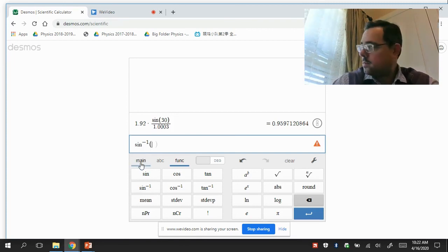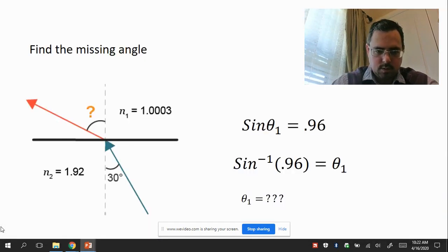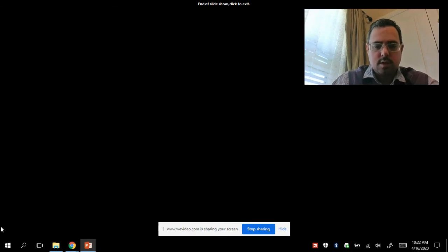We press main again, and then 0.96, close the parentheses. And there we have our answer on the right side. So it's about 73.7 degrees. And that is our answer.